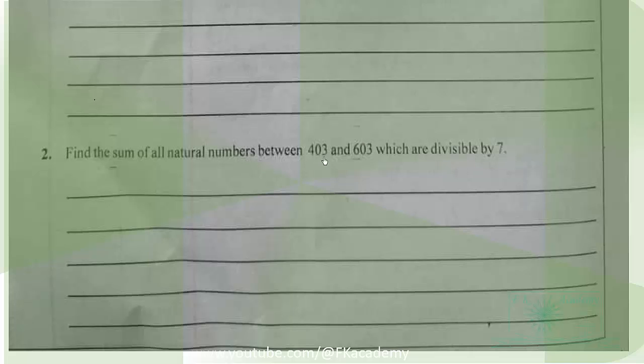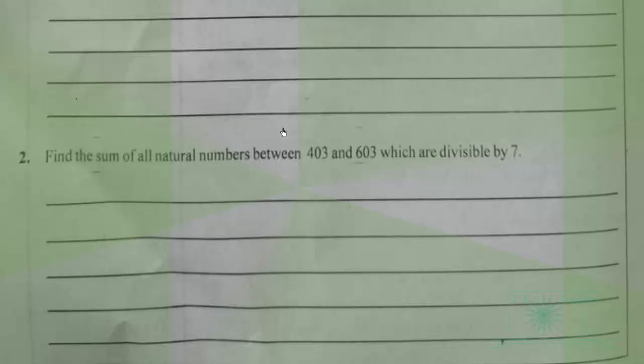The first number within this range that is divisible by seven is 406, and the last number within this range divisible by seven is 602. Since 602 is the last term in a sequence, this will be an arithmetic sequence.